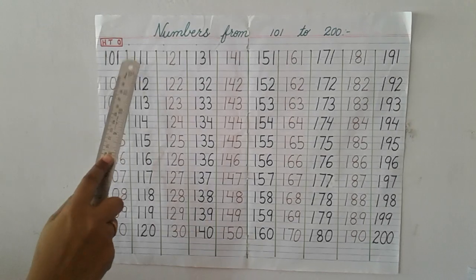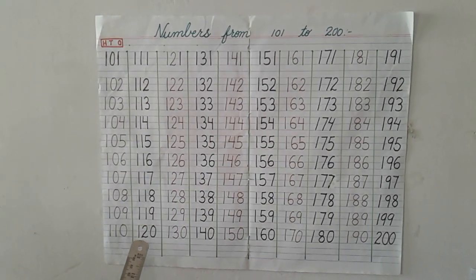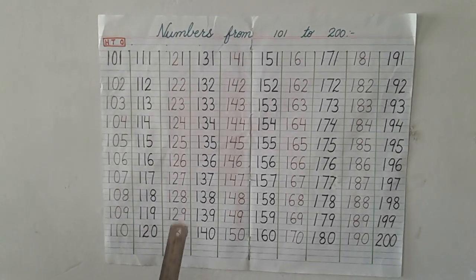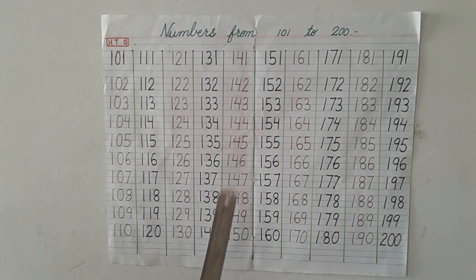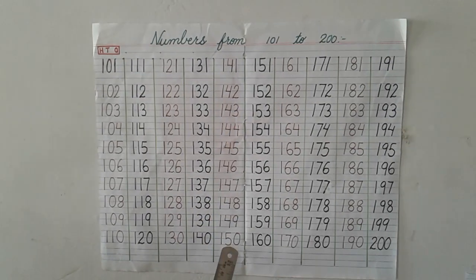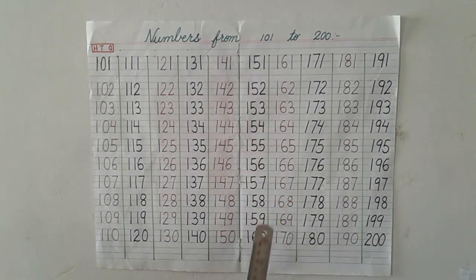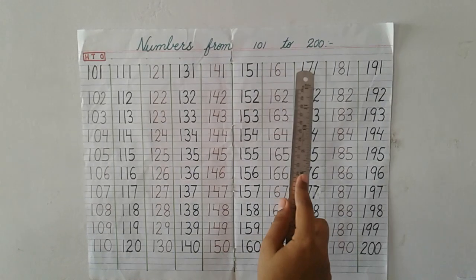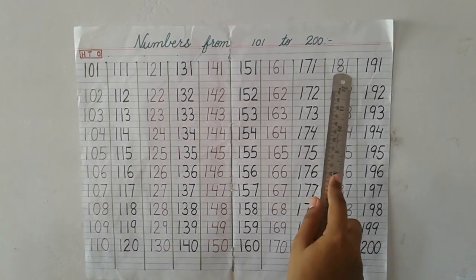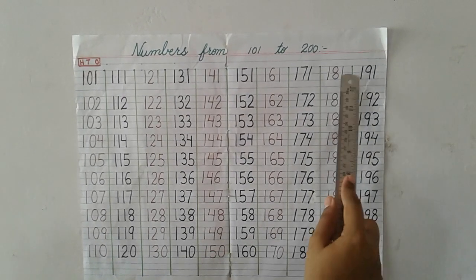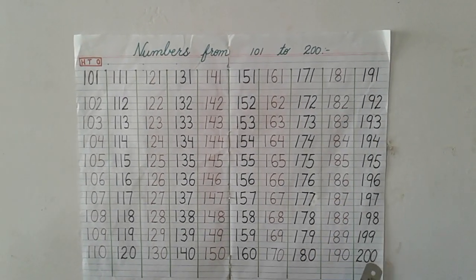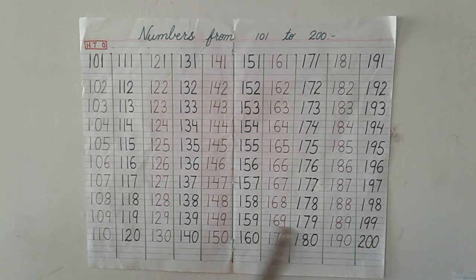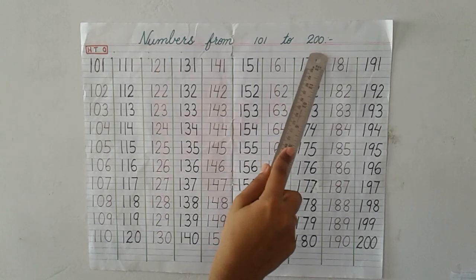Same way for 120. Numbers 121 to 130, 131 to 140, 141 to 150, 151 to 160, 161 to 170, 171 to 180, 181 to 190, 191 to 200. How we are going to write 200? We write 2, 0, 0. This is 200. This way you are going to write numbers from 101 to 200.